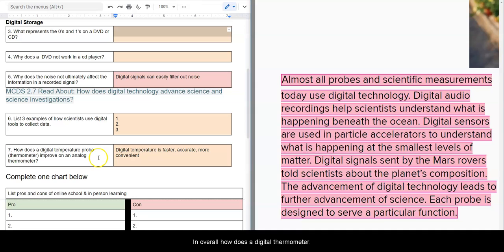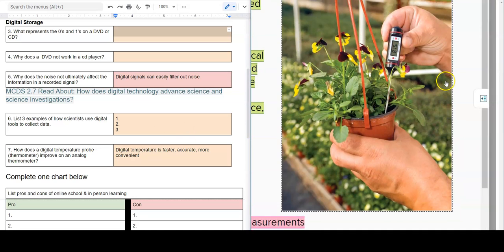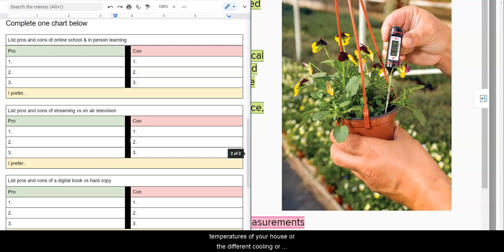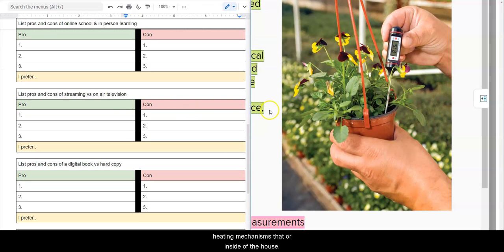And overall, how does a digital thermometer, such as this one, why is it preferred over an analog? It takes the temperature faster, it's more accurate, and it's more convenient. And basically, that information can be sent anywhere. If we were to look at an analog thermometer, we'd have to actually look with our eyes or have some sort of camera record it. Whereas a digital one, we can have these signals Bluetooth to our phone, stored in the computer and sent over the internet. And with smart thermostats and smart thermometers, you can actually tell lots of different information for the different temperatures of your house or the different cooling or heating mechanisms that are inside of a house.